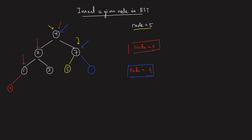The moment you reach a null position, just create a new node and insert it there. The question also states that the given value will never already exist in the BST — you'll never be asked to insert a duplicate. So the logic is very simple: find where it can be and insert. That position will always be a leaf position.